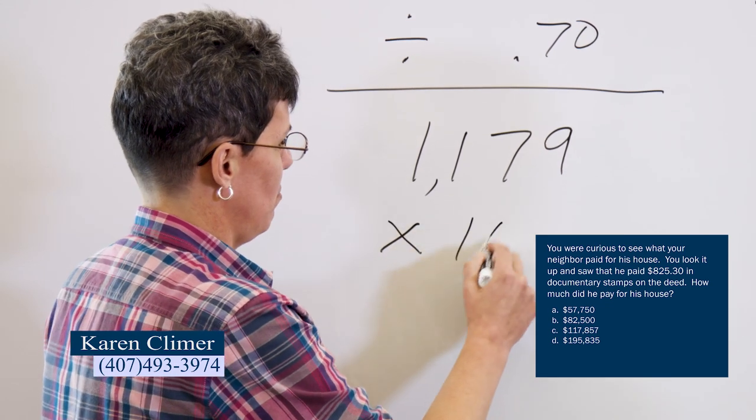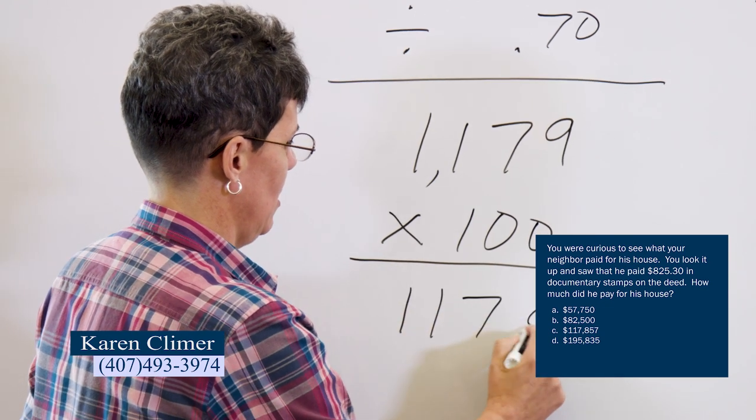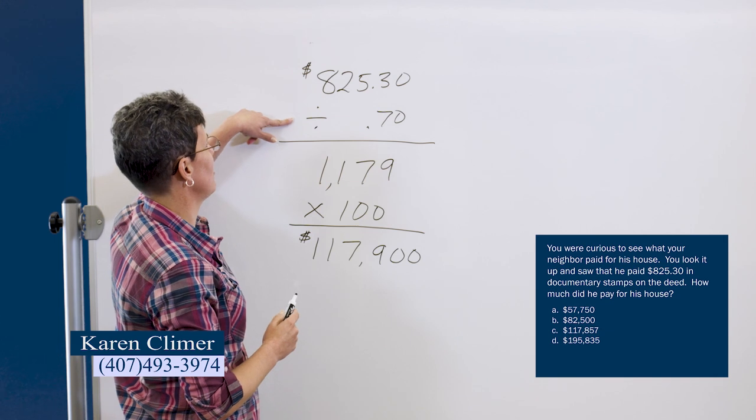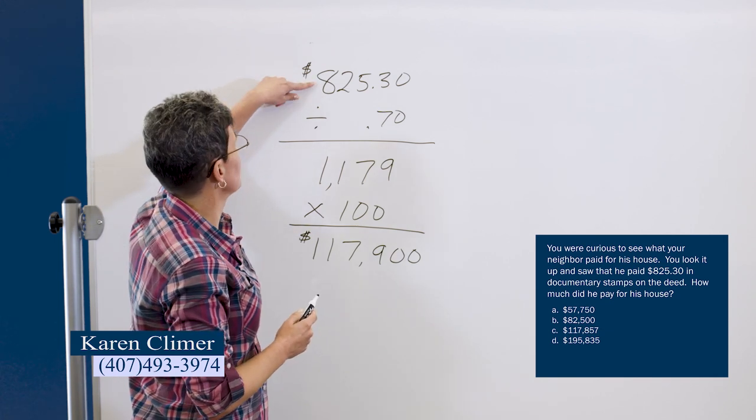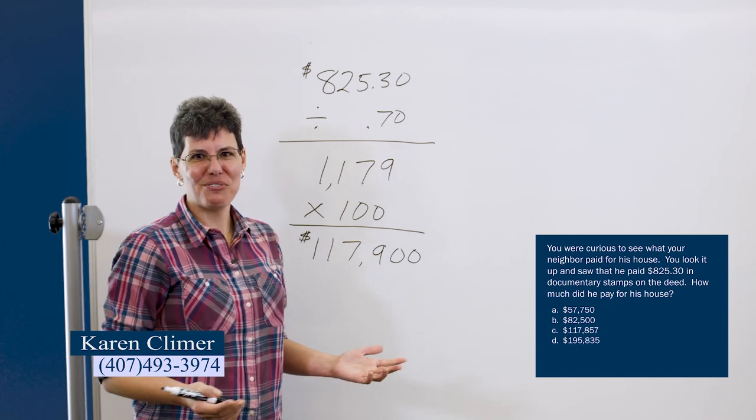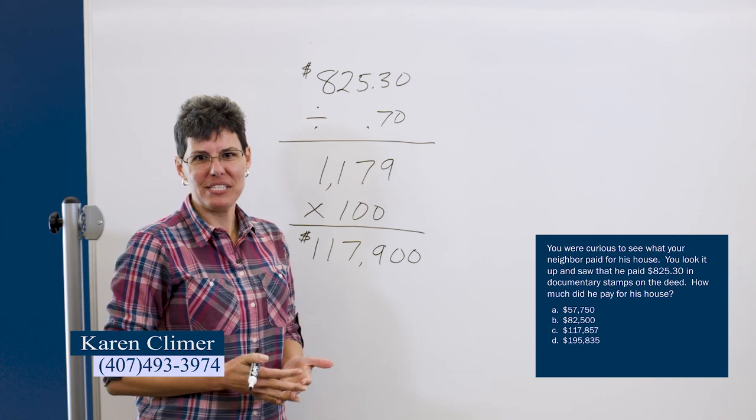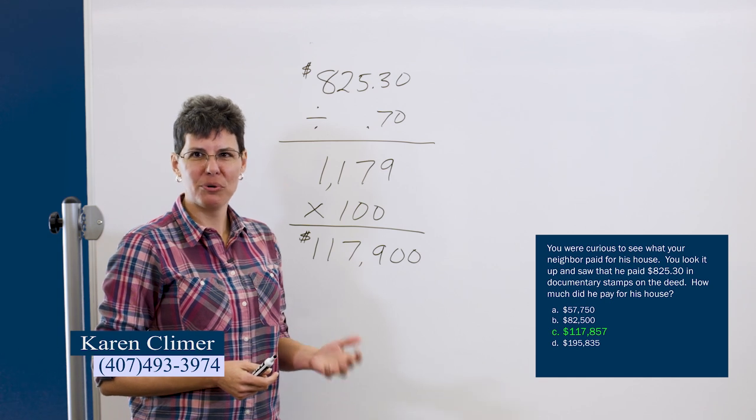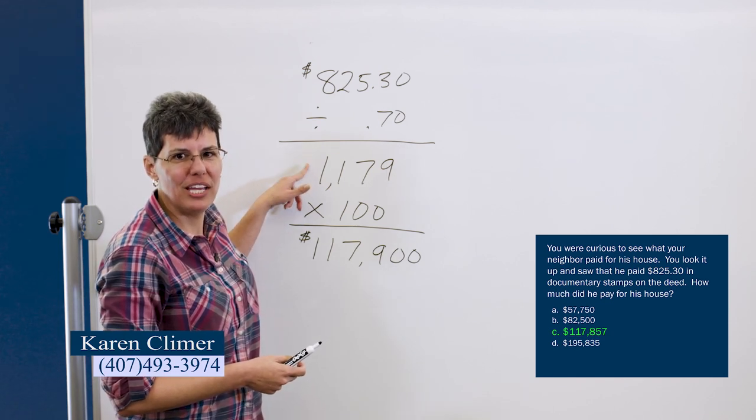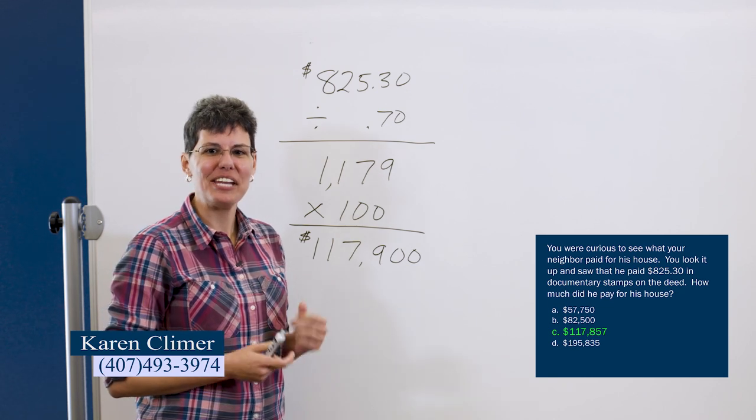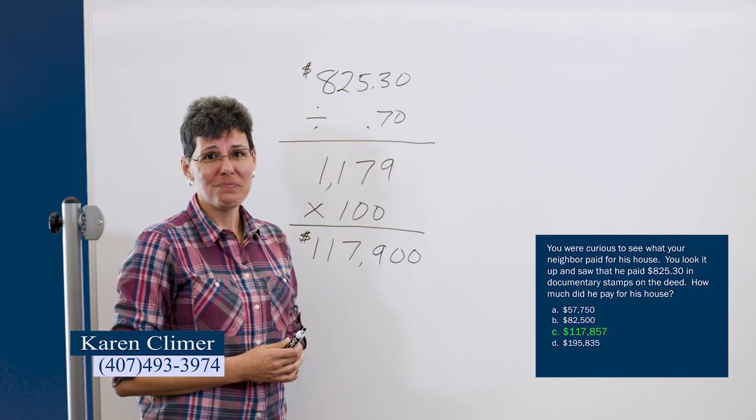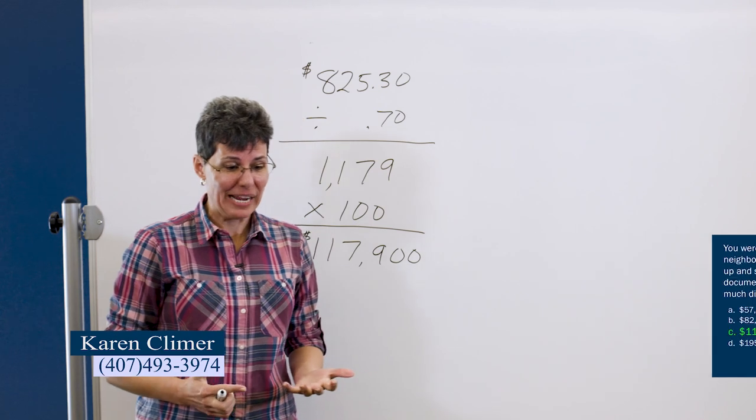And this is just backwards of what we did before. We divided by 100 times 0.70 to get the amount of tax. So now we just divide by 0.70 times 100. So $117,900. But wait a minute, that's not one of the choices. The answer to this one would be C, $117,857. Because if you remember when we did it forward, we had to round at the stamps to get a whole number. So if you wanted to check your work and do $117,857 and do it just like we did on the last video, go forward, you would get $825.30. So this is two ways you can do the problem and two ways that you might see it on the state exam.